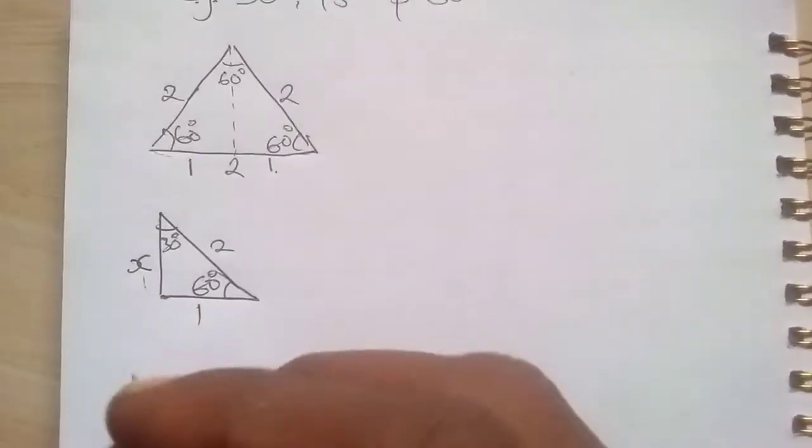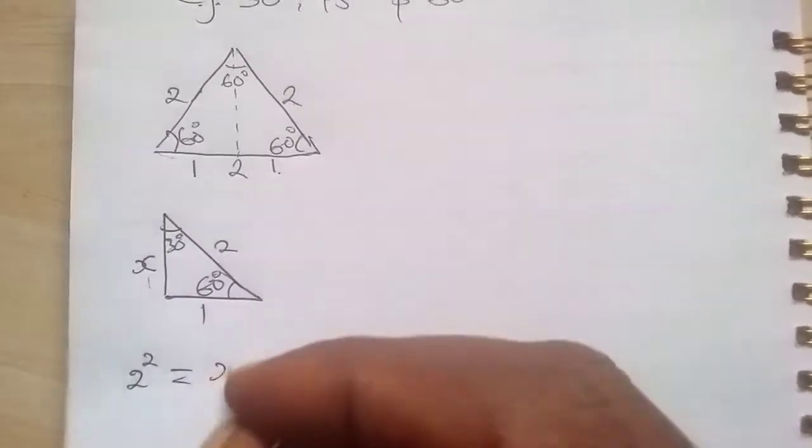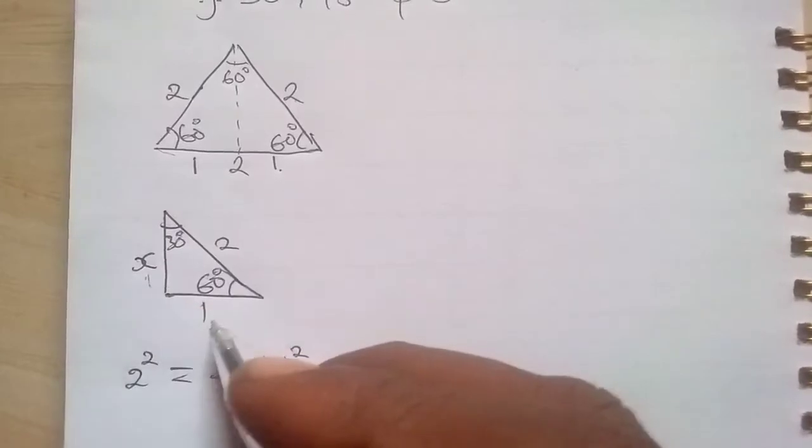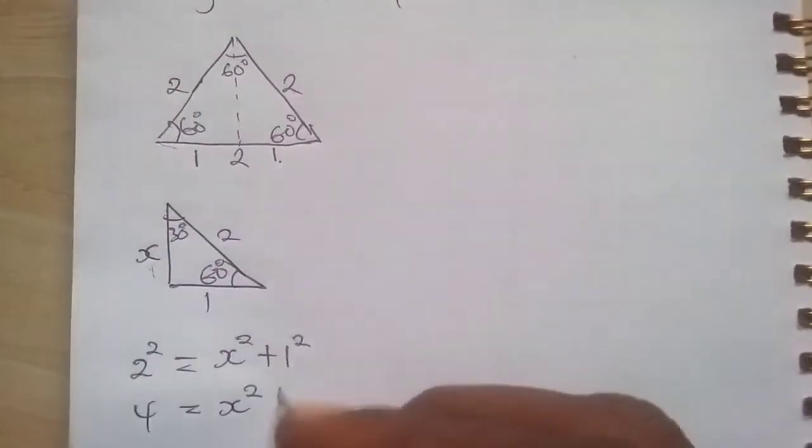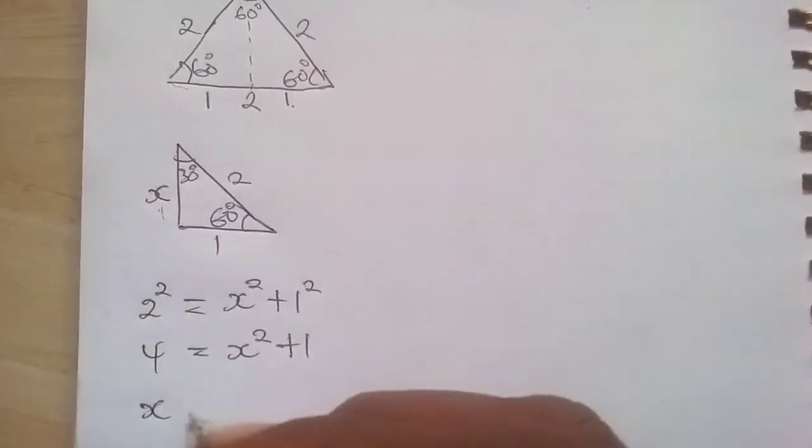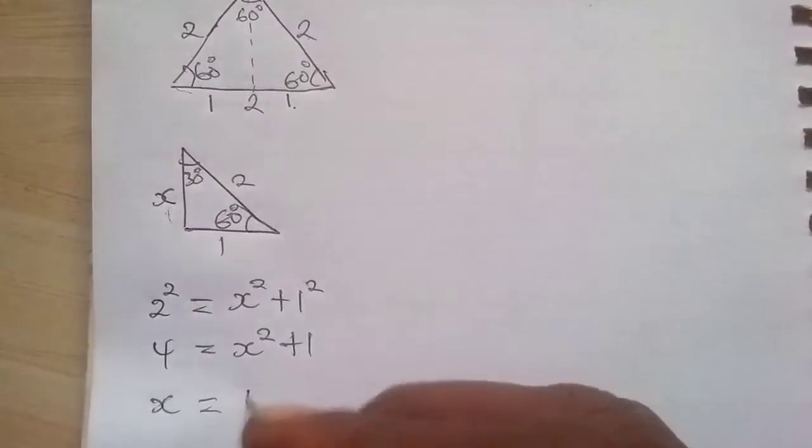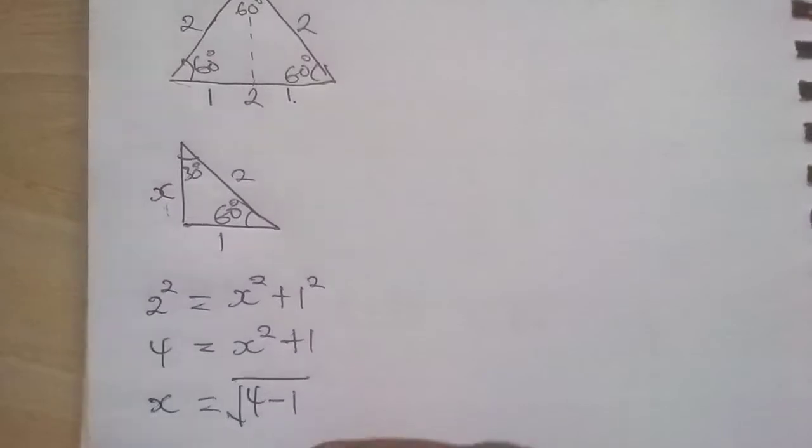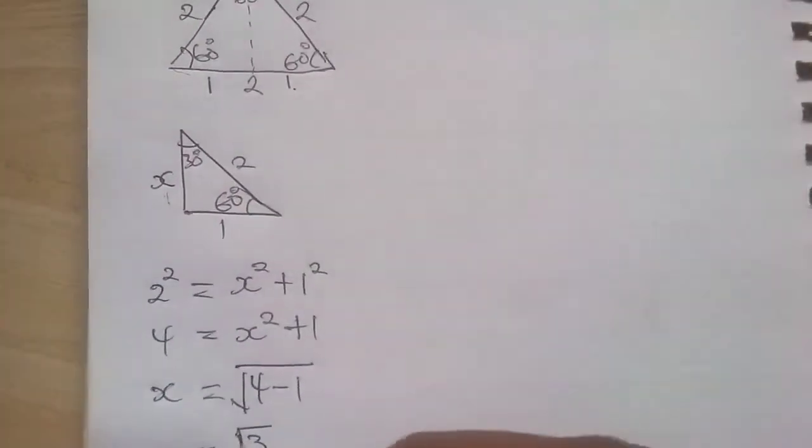If we call here x, so we can say that 2 squared, using Pythagoras' theorem, is equal to x squared plus 1 squared. So 4 is equal to x squared plus 1. If we now make x subject of the formula, we'll have that x is equal to 4 minus 1, which is 3, root 3. So it means here root 3.